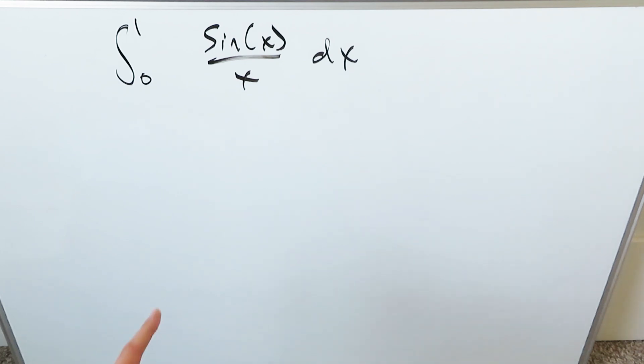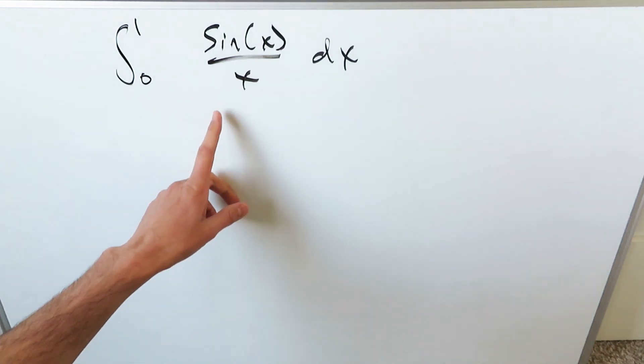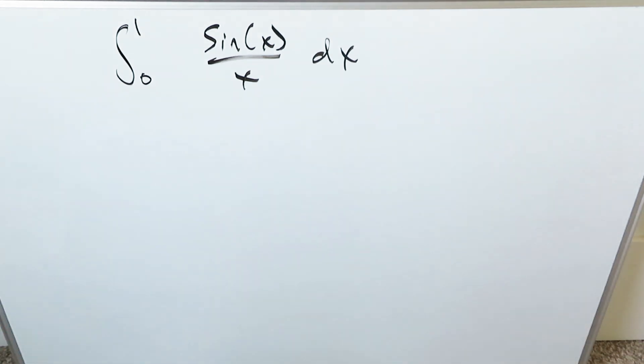The traditional techniques - u substitution, trigonometric substitution - will fail because you can't really work this through. You don't want to worry about approximate integration because we have some better technique available. Our technique here is to utilize the McLaurin series to open up that sine x into a function and then we can work with it.